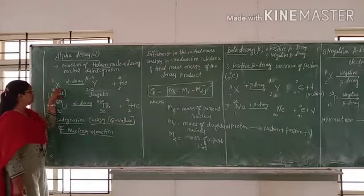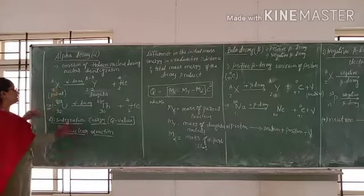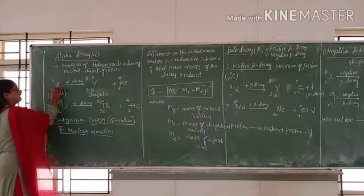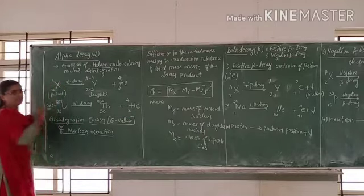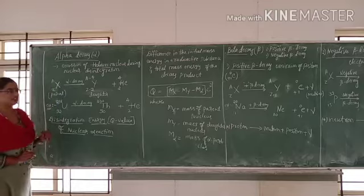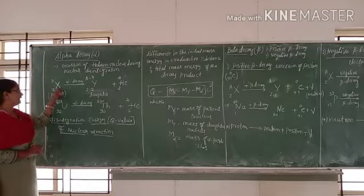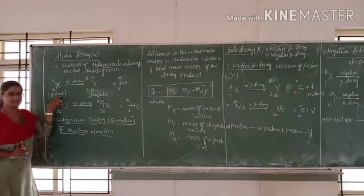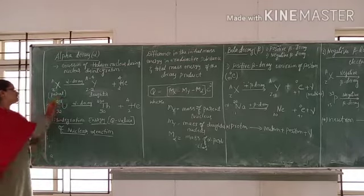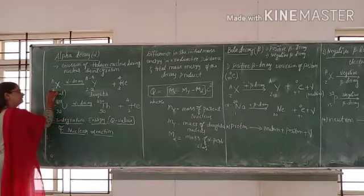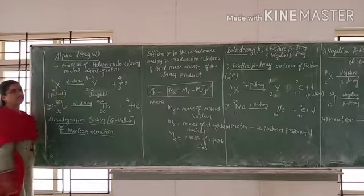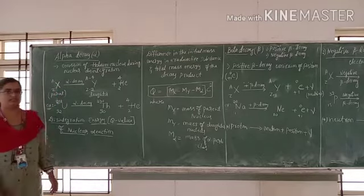Here, X is an example representing the symbolic representation of the parent nucleus. Z represents the atomic number and A is the atomic mass number.